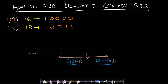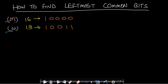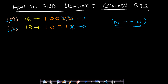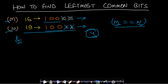To find these common bits, we check if m equals n. If not, we right-shift both m and n by one, removing the least significant bit, then increment a counter. We repeat until m equals n. For the range 16 to 19, after two right shifts both become 100 (decimal 4), so m equals n. We have now found the fixed prefix bits.